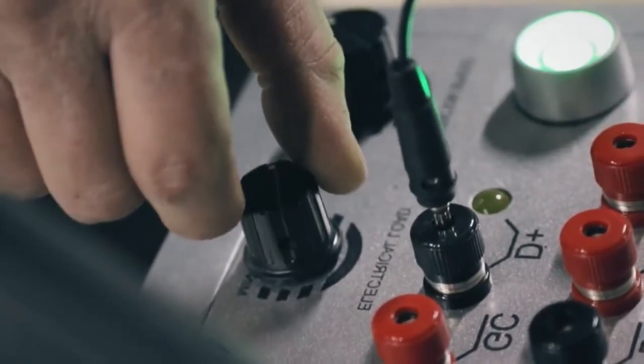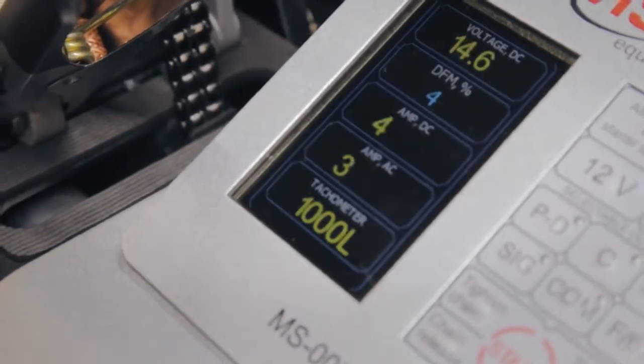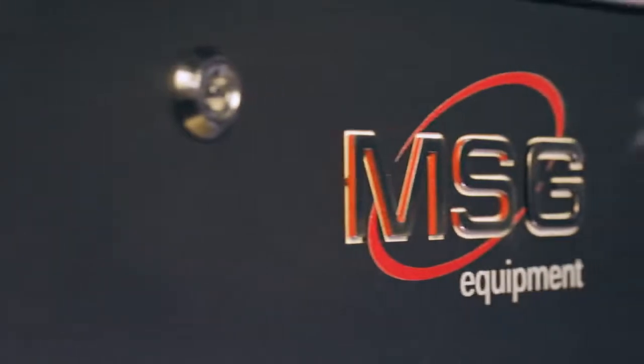You can check voltage regulators separately from alternators. If you service trucks, MS002Con is the best solution for you. Quick testing contributes to optimization of working processes.